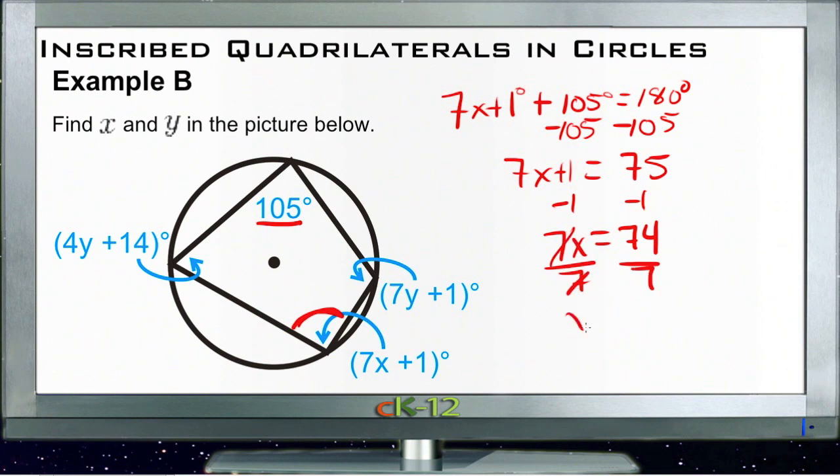7's cancel, and x equals about 10 and a half, 10.57. So x is 10.57.